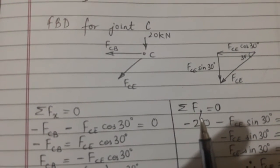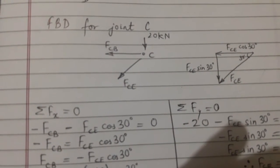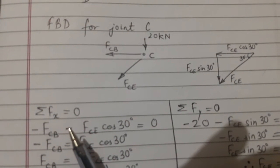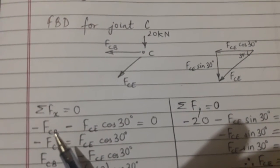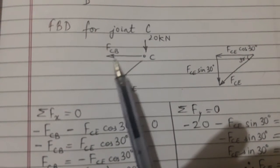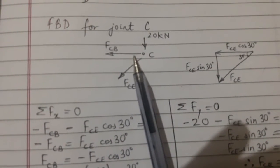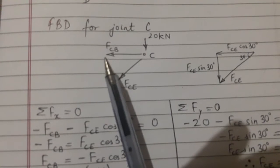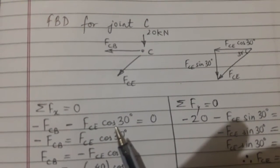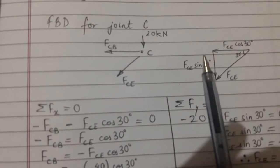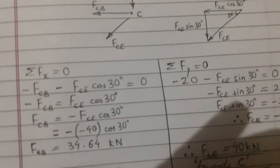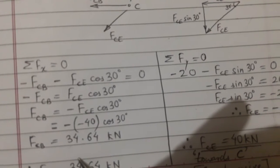Now we will have summation of Fx equal to 0 and summation of Fy equal to 0. All the forces which are in X direction will be taken here. FCB is taken as negative since it is towards the left side, and FCE cos 30 is also negative because this is also towards left.